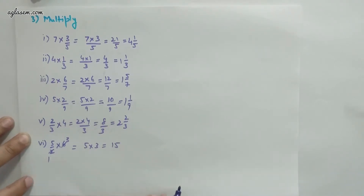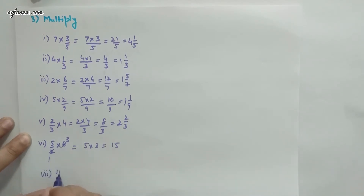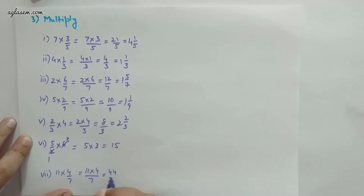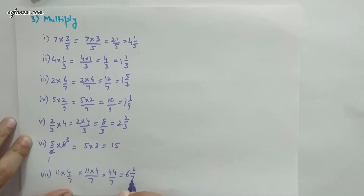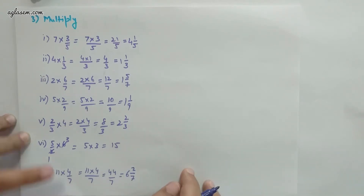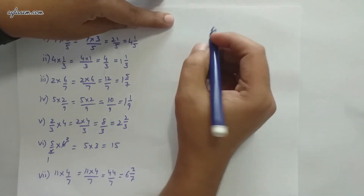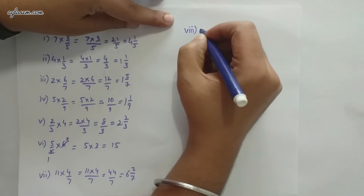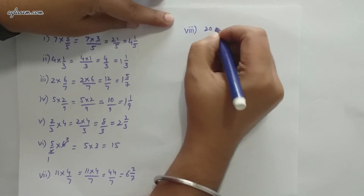Part 7: 11×(4/7). Multiply the numerators: 44/7. When divided, we get a mixed fraction of 6 and 2/7.